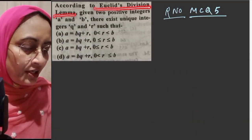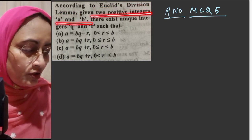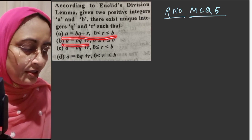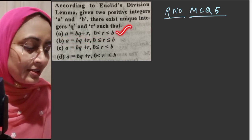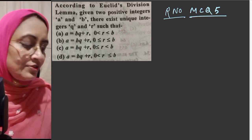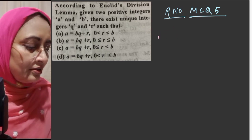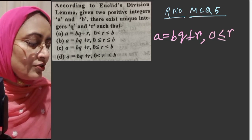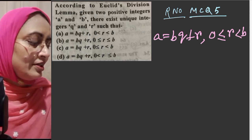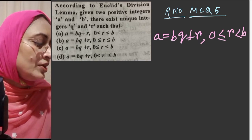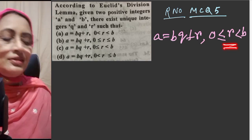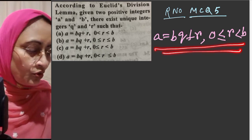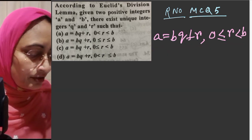Question number 5: according to Euclid's division lemma, there exist unique integers q and r such that a equals bq plus r. The condition for r is given in different options. By definition, the remainder can never be negative and is always less than the divisor. Therefore the correct condition is: 0 ≤ r < b. The correct answer is option C.